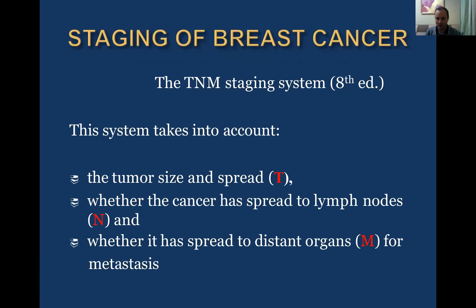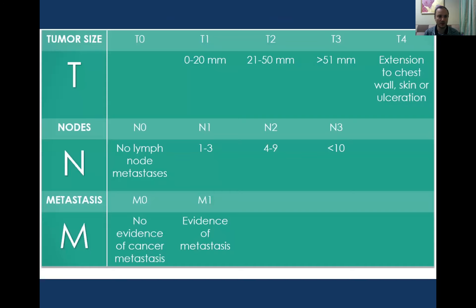Staging of breast cancer uses the TNM classification — we now have the eighth edition. T refers to the primary tumor, N to regional lymph nodes, and M to distant metastasis. Tumor size: T1 is less than 2 cm, T2 is 2-5 cm, T3 is more than 5 cm, and T4 involves extension to the chest wall, skin, ulceration, or diffuse forms. N1 is 1-3 lymph nodes, N2 is 4-9, and N3 is more than 9. M indicates presence or absence of metastasis.